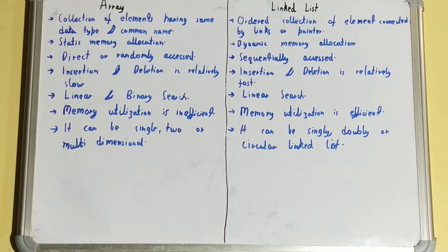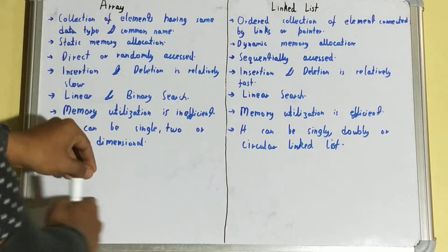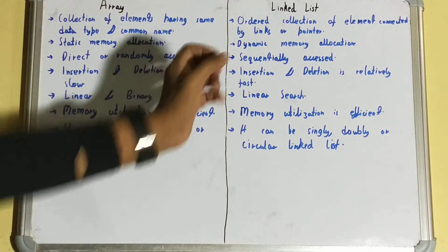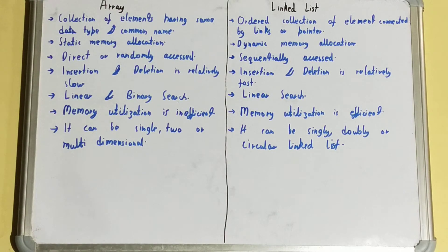For insertion and deletion, arrays are relatively slow because after deleting an element all other elements must be shifted and index numbers updated accordingly. In a linked list, insertion and deletion are relatively fast because you simply unlink and relink elements.